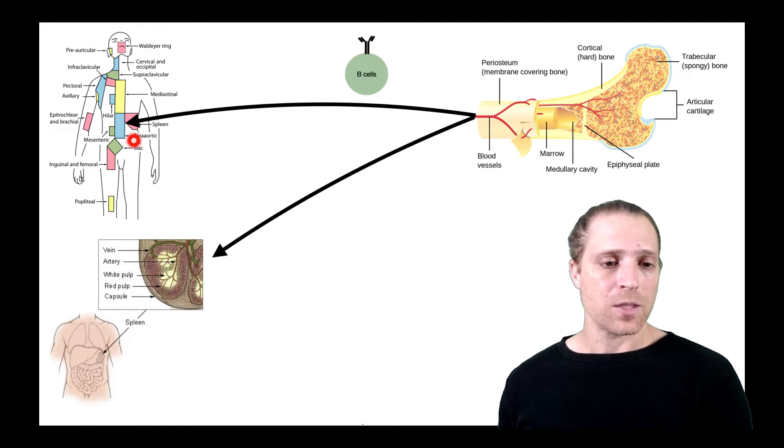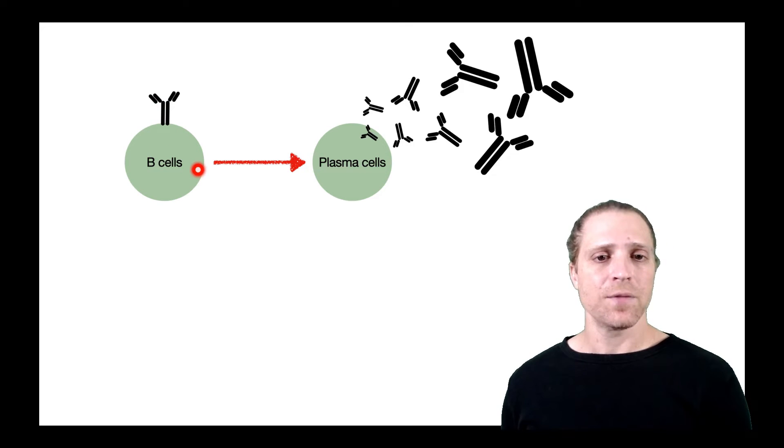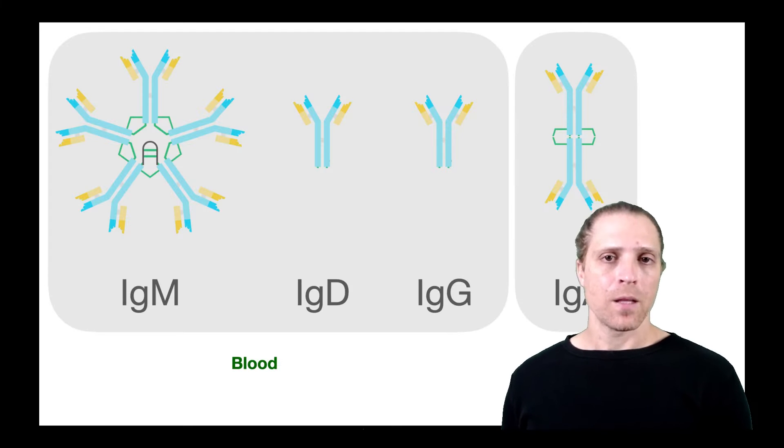Therefore, we are talking about B cells that express the B cell receptor, and these cells under the relevant stimuli can differentiate into plasma cells, which produce and secrete soluble antibodies.